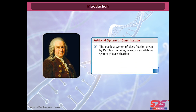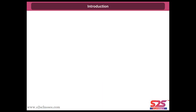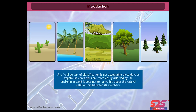The earliest system of classification given by Carolus Linnaeus is known as the artificial system of classification. It uses superficial morphological characters like habit, color, number of stamens, and shape of leaves as the basis for classification. Artificial system of classification is not acceptable these days as vegetative characters are more easily affected by the environment, and it does not tell anything about the natural relationship between its members.